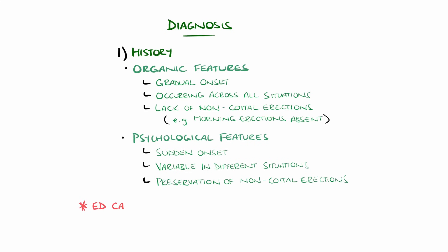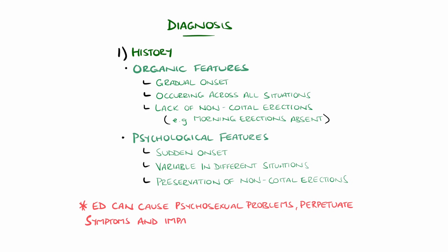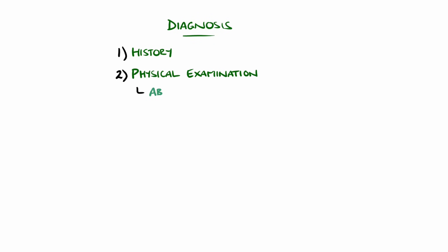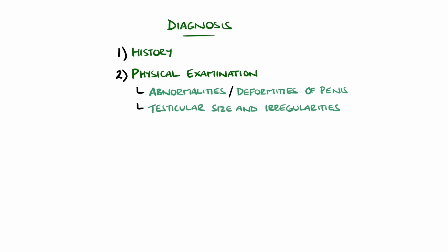It's also important to remember that ED can lead to development of psychosexual problems, as well as perpetuation of the ED and potentially an impact on relationships and mental health. The International Index of Erectile Function is a 15-point questionnaire used to assess various domains including sexual desire as well as the impact. Physical examination includes examination of the genitals looking for any deformity or abnormalities of the penis, for example Peyronie's disease, which is a condition where there is fibrosis within the tunica albuginea which can lead to curvature and potentially pain with erections. Testes are examined for size and irregularities such as any lumps, and the degree of androgenization should be assessed as a potential clue for hypogonadism, for example hair pattern and gynecomastia.